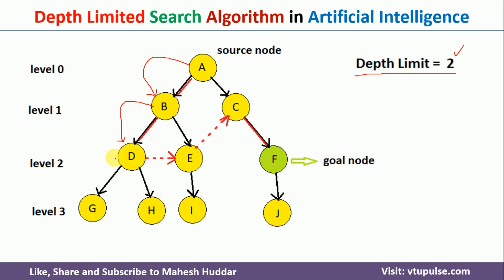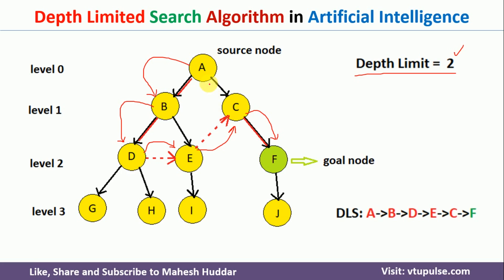Rather than going to G, it will go to the right-hand side and reach E. When we come to E, we have again reached depth 2, so it will not go to I. It will go back to C, and from C it will go to F. When it reaches F, we have found the goal node. The path for Depth-Limited Search is: A to B, B to D, D to E, E to C, and C to F.